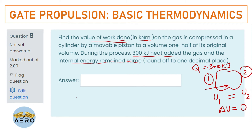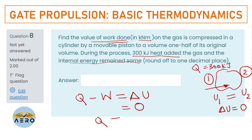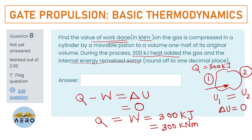Recall the first law of thermodynamics: Q − W = ΔU. Since ΔU = 0, we have Q = W = 300 kJ. Since 1 kJ = 1 kN·m, the work done is also 300.0 kN·m. No need to write the unit again as it is already mentioned.